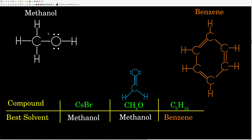Welcome back, guys. First of all, this is the Lewis structure for methanol. We see it is definitely a polar molecule. The electronegativity of carbon is 2.5, oxygen is 3.5, difference here is 1.0. Hydrogen is 2.1, oxygen is 3.5, difference is 1.4. So definitely a polar molecule, not symmetric. Now, this is benzene. Remember, any compound that has only carbon and hydrogen in it is non-polar. So we have a polar solvent and a non-polar solvent.